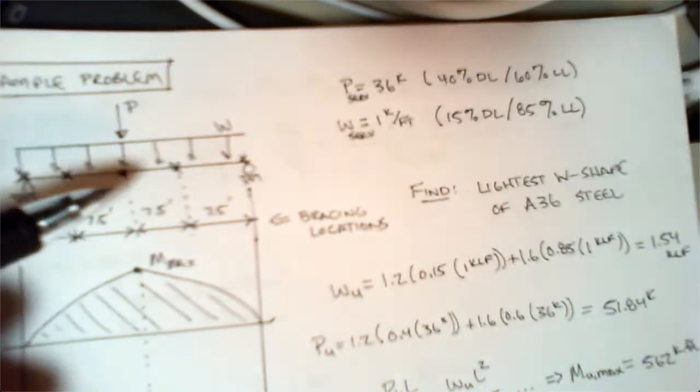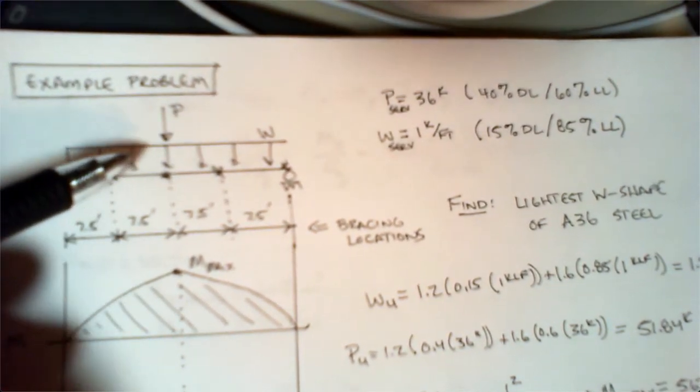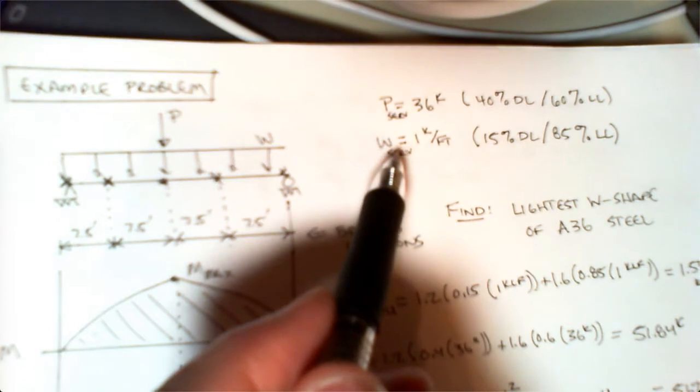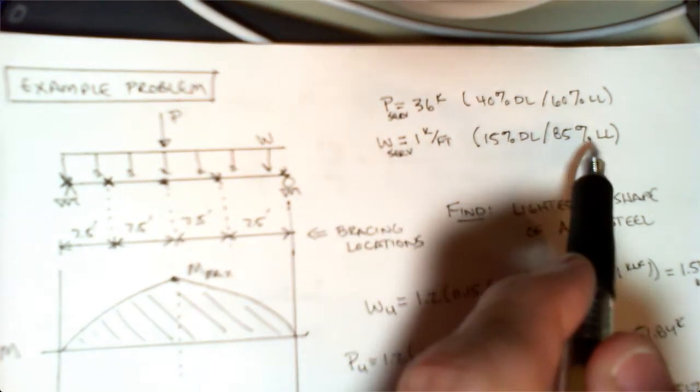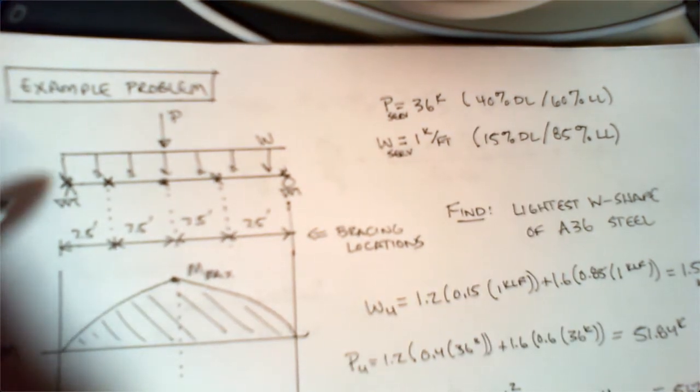We have a point load P located at the middle. For this particular problem, our service load is 36 kips, which is 40% dead and 60% live, and our service distributed load is 1 kip per linear foot, 15% dead and 85% live.